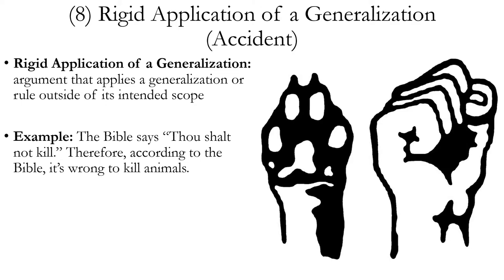One mistaken type of reasoning with generalizations is called the fallacy of accident, or rigid application of a generalization. The more usual name is the fallacy of accident, which is shorter. But the textbook's name, rigid application of a generalization, describes more accurately what error this fallacy commits. This is an argument that applies a generalization, rule, or principle outside of its intended scope. The generalization might be true, however it's only supposed to apply within a certain domain or context.